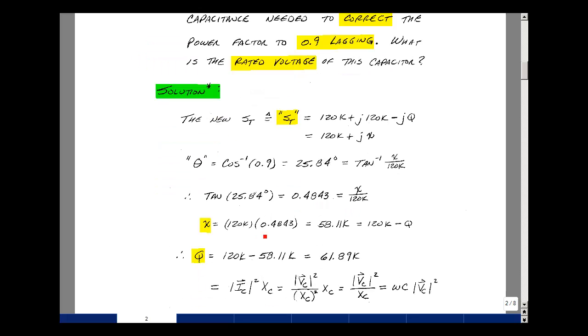So now I can solve for X. Then X is equal to 120k times 0.4843, and that's 58.11k. Again, that has to equal 120k minus Q. So let's solve for Q now. Bring it to the other side of the equation, I'm going to have 120k minus 58.11k, and that's 61.89k.